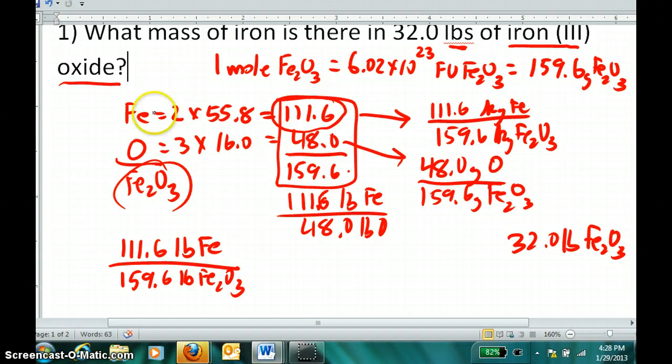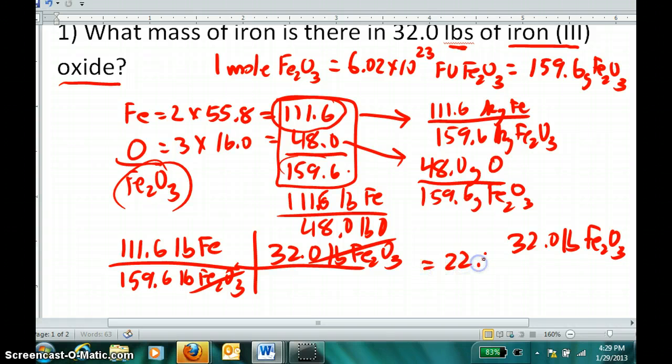Because this is true: given this formula and a 2 to 3 ratio and these masses, this part-to-whole mass is a relationship I can use for conversion, part-to-whole, whole-to-part. And if I simply multiply this by 32.0 pounds of iron oxide given in the equation, I get my final answer, 22.4 pounds of iron.